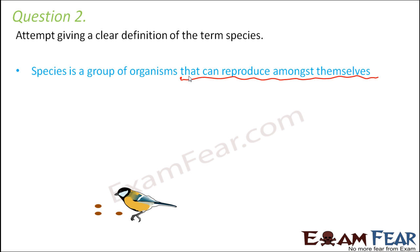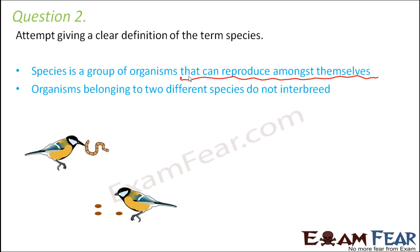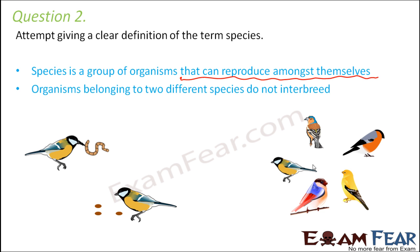Two organisms of different species cannot interbreed. If you remember Darwin's finches, those that came to the island at the beginning all belonged to the same species and could reproduce amongst themselves, even with shorter or longer beaks. But later, as small mutations happened, many different finches were produced that did not belong to the same species and could not interbreed with each other.